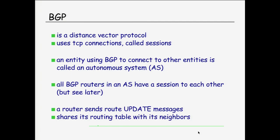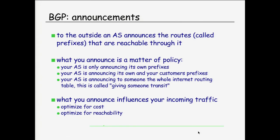Inside your AS, all your BGP speakers are typically connected to all other BGP speakers. Telling another peer that you have a network — that you know how to route traffic to it — is called an announcement. What you announce to other ASes is a matter of policy, and that's why BGP is used on the global internet: you need this policy to manage the way traffic flows. BGP allows you to apply a lot of policy to your routing decisions.